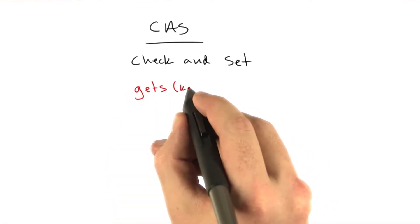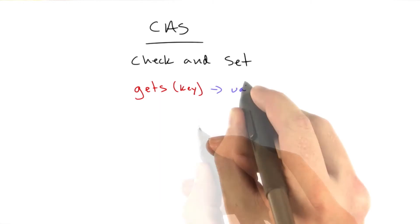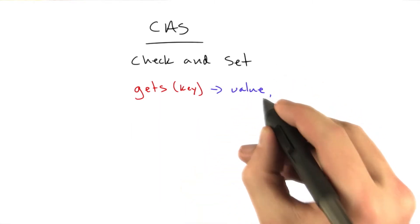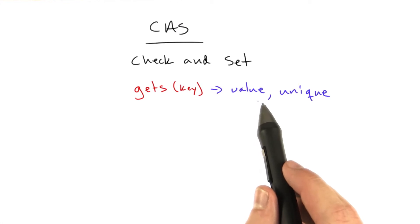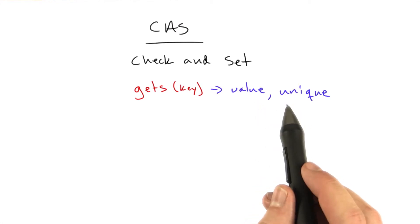One is called gets, and this takes a key, and this is instead of get. And what this returns is the value plus what they call a unique, which is basically like a hash of the value or a counter. It's some value that's unique,